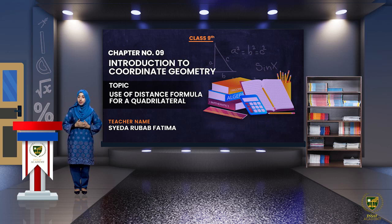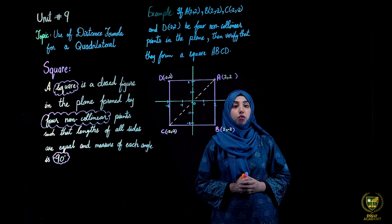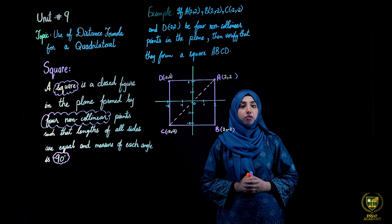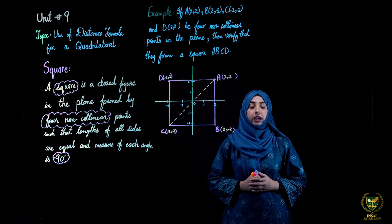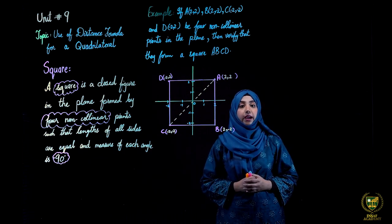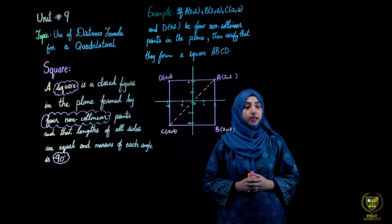We will see which conditions are generated for a quadrilateral. For clearer understanding, we will go to the lightboard. In the last lecture we discussed four non-collinear points, which basically form closed figures called quadrilaterals. A quadrilateral is defined as a closed figure with four vertices and four sides.